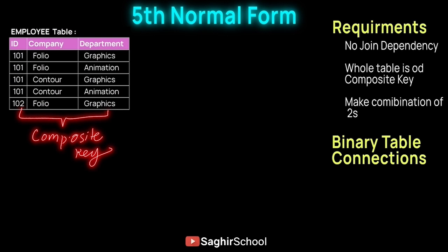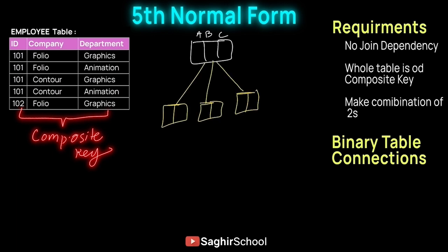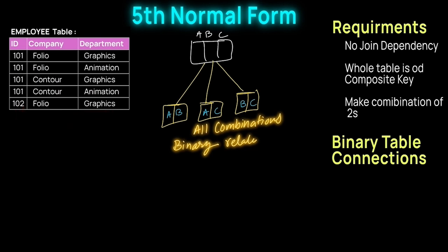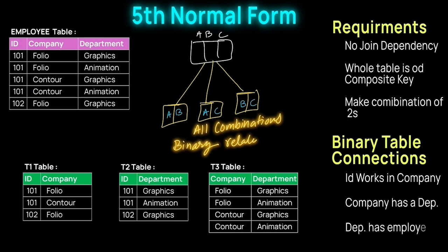The other condition for Fifth Normal Form is that the whole table must be a composite key — meaning the combination of all columns forms a unique identifier for the table. Fifth Normal Form is achieved by splitting the table into the maximum possible number of tables. For a three-column table, the maximum split is three tables using all binary combinations — meaning two-column tables representing every pair of columns.